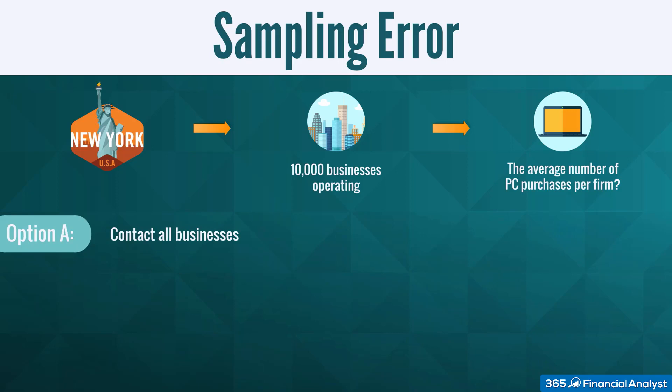By doing this, we'll obtain the actual number of PCs acquired on average, or, in other words, the true population number.